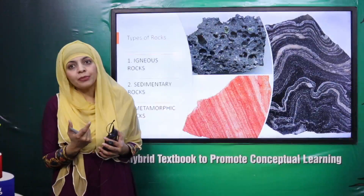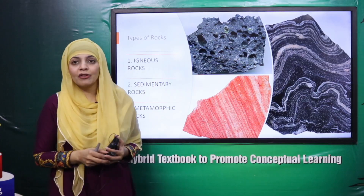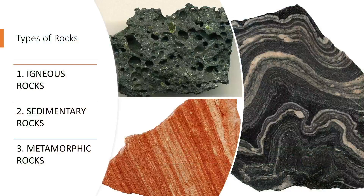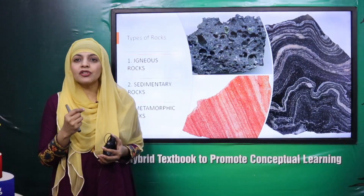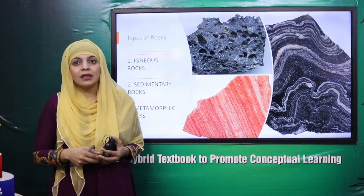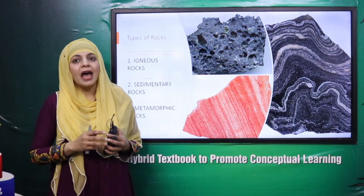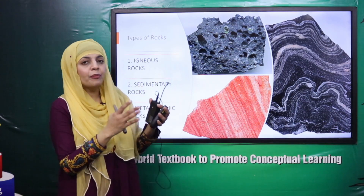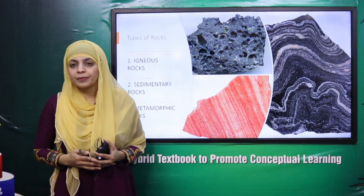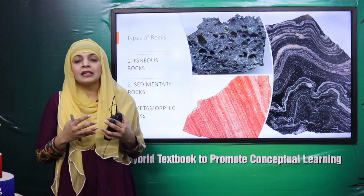Can you give some examples of igneous rocks? You can have a look at the screen. Basalt, granite, obsidian — these are all igneous rocks. Can you give some examples of sedimentary rocks? They have layers — limestone, for example. And can you give an example of metamorphic rocks? Like marble and slate — these are all metamorphic rocks.